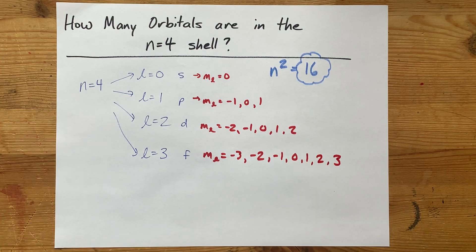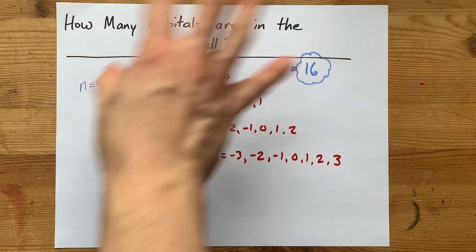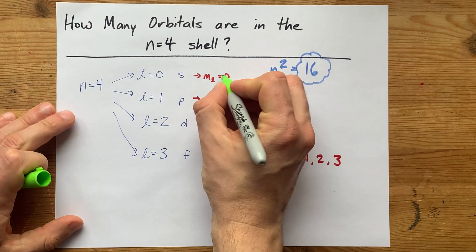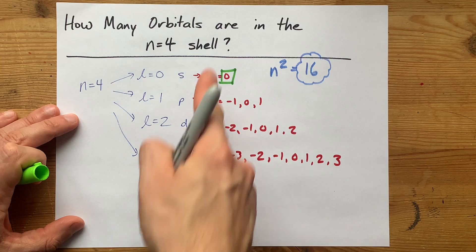Those are the rules. Now, what your teacher's asking here is, what is an orbital here? The answer is, each one of these options is an orbital.